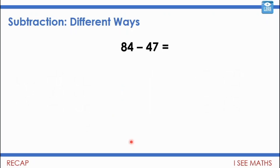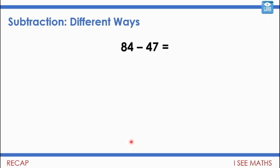So I wonder if you can have a go — let's look at 84 subtract 47. Can you do it in one way, or different ways? Can you find three different ways? Pause the video and explore. Okay, so 84 subtract 47: I could just do 87 subtract 50 — make both numbers three more — and that gives the same answer as 84 subtract 47.